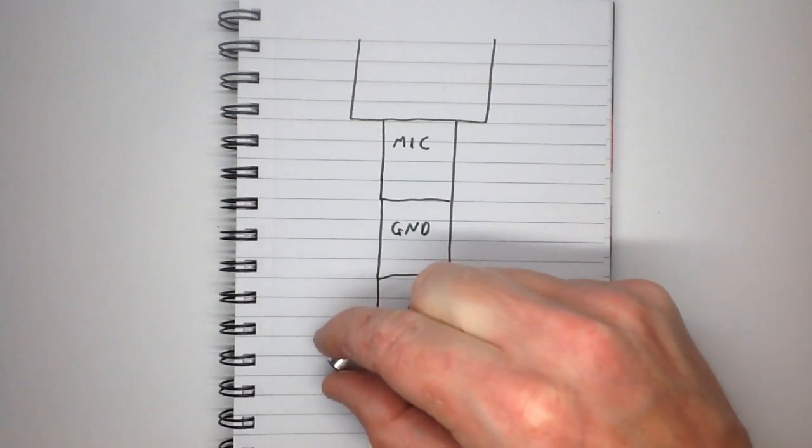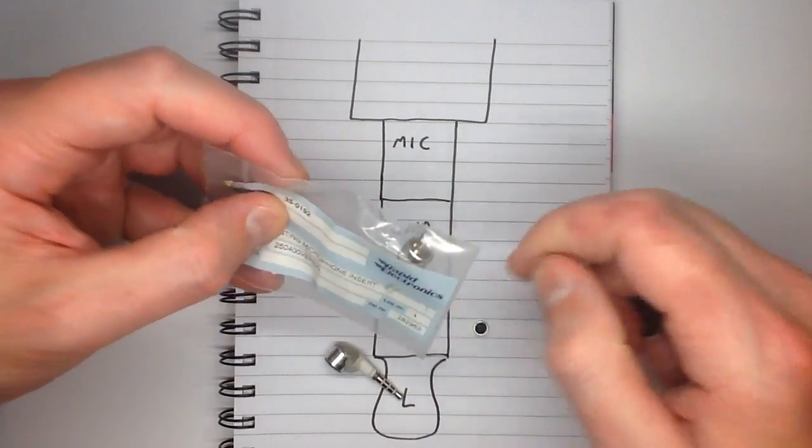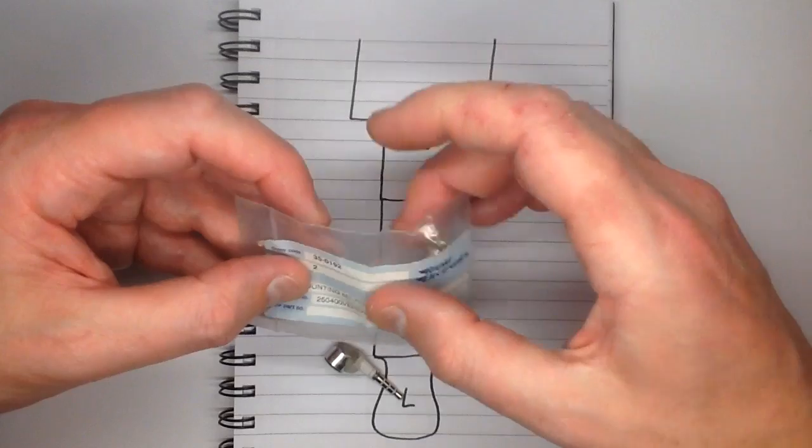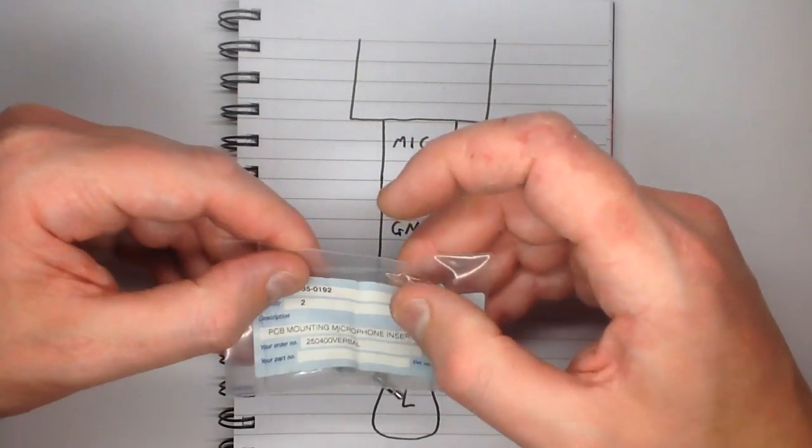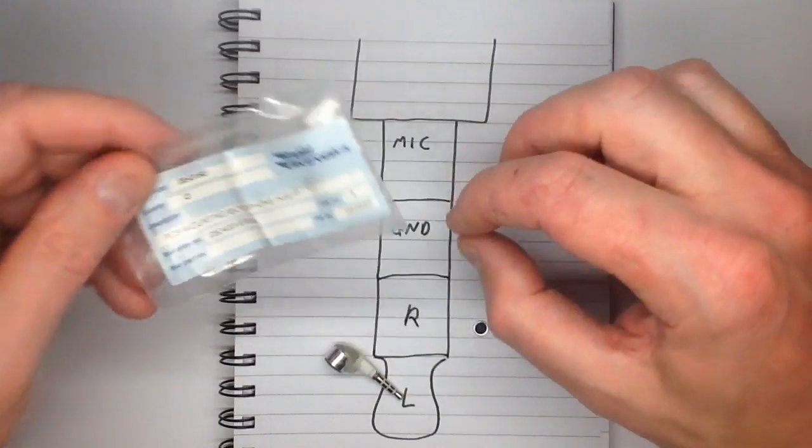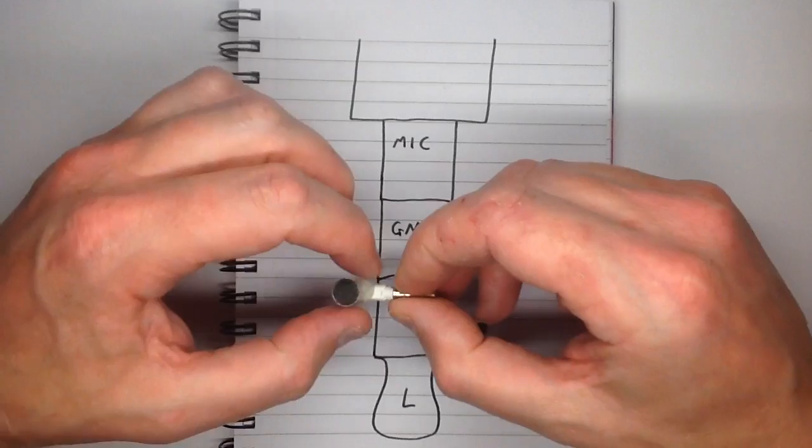This one in particular. Where is it? This one which I got from Rapid Electronics, which I actually had lying around in my workshop. It's order number 35-0192, and that's Rapid Electronics in the UK. I just thought maybe the bigger microphone will sound richer again.